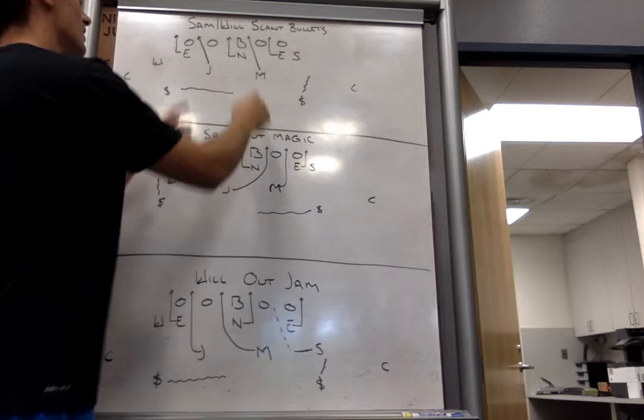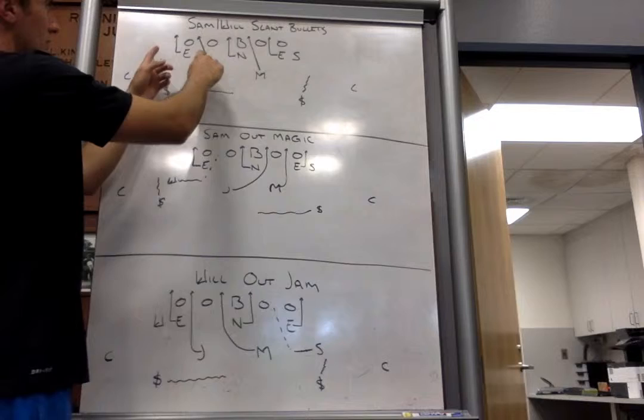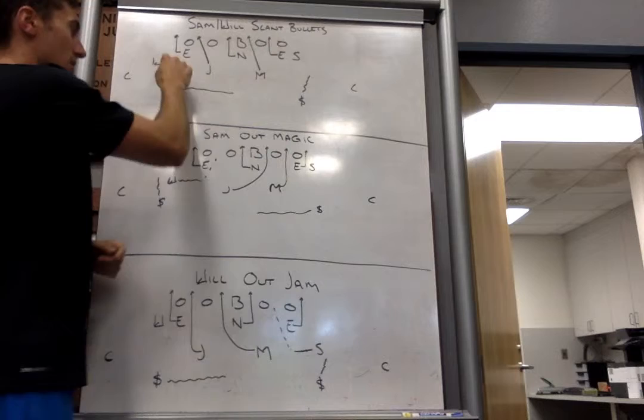Inside linebackers, you're blitzing your gap. So, here's Sam. Mike's got A. Jack's got B. Spinning down to the Sam. If it will, going the other way, Jack would get A. Mike would get B. Spinning down to the Will. Again, running our gold or green coverage.